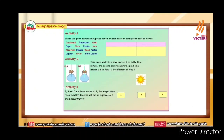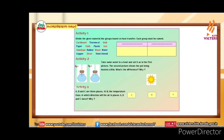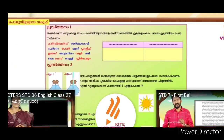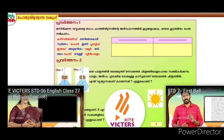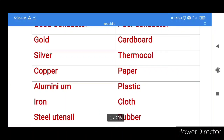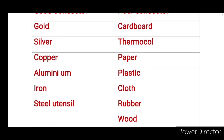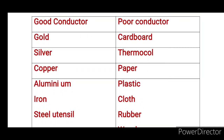We need to divide the given material into groups based on the heat transfer. Each group must be named. We need to add good conductors. Gold, silver, copper, aluminum, iron, and steel utensils are good conductors.